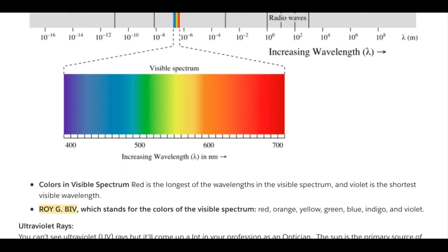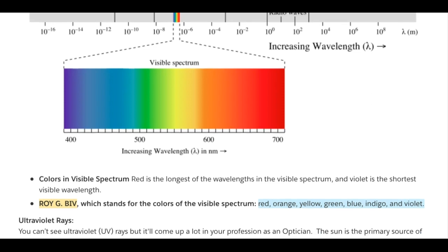Colors in the visible spectrum: red is the longest wavelength and violet is the shortest. An easy way to remember all the colors in the visible spectrum is the acronym ROYGBIV, which stands for the colors going from the largest wavelength — red, orange, yellow, green, blue, indigo — ending with the shortest, which is violet.